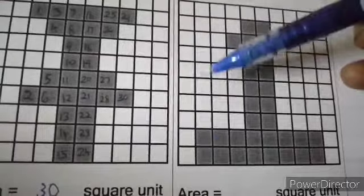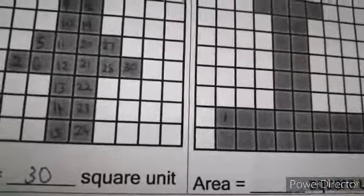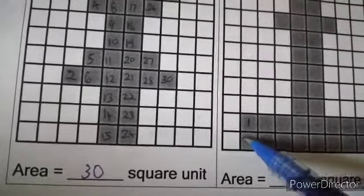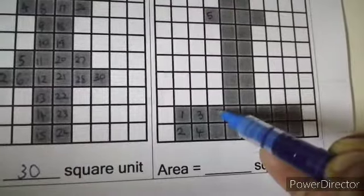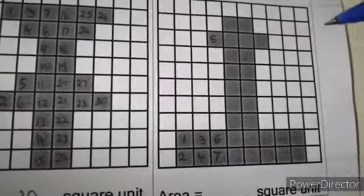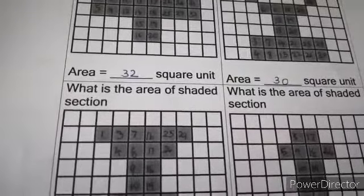Now the last picture. The first row has no shaded boxes. Starting from the first shaded box, mark it 1 and number all boxes in order: 1, 2, 3, 4, 5, 6, 7, and so on. After counting all shaded boxes, there are 32 boxes. So the area is 32 square units. Always remember, area must be written with a unit — square units.